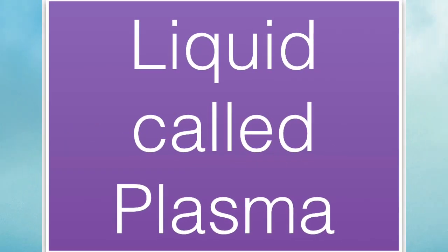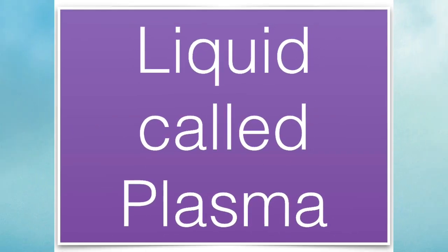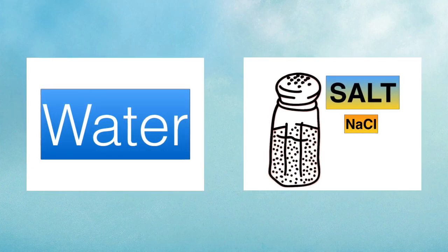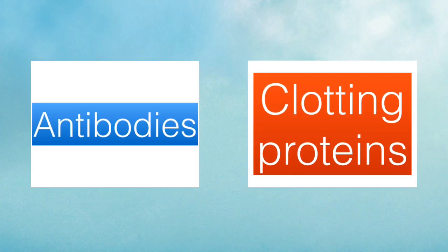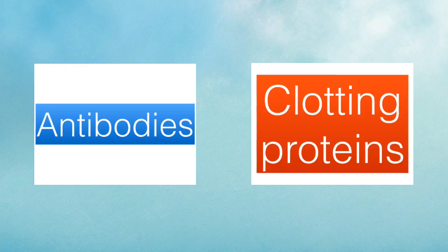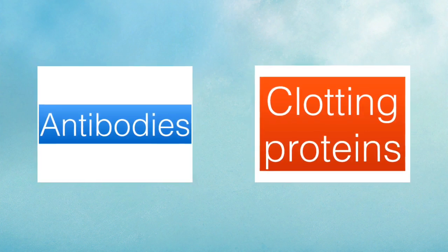The largest component of the blood is the liquid called plasma. Plasma is mostly made up of water, however it does contain many dissolved salts and very important proteins, the most important of which are antibodies and clotting proteins.